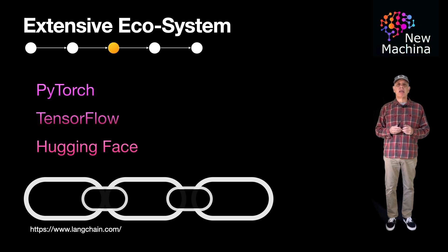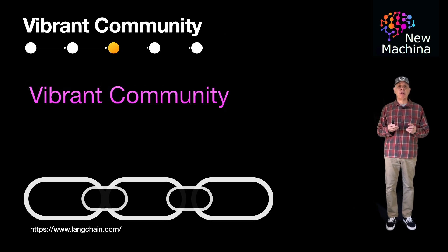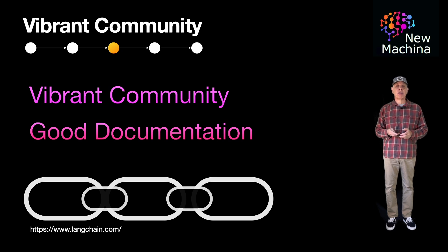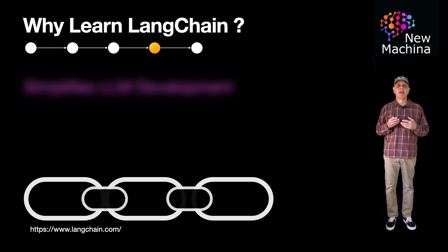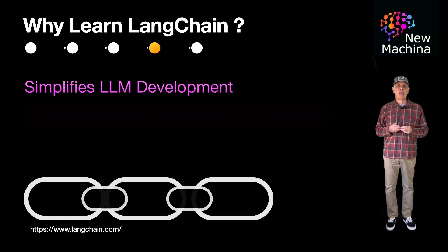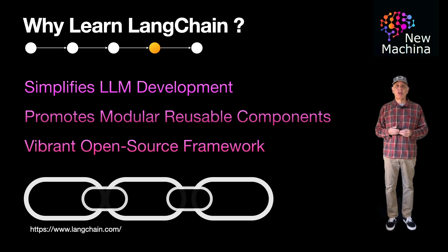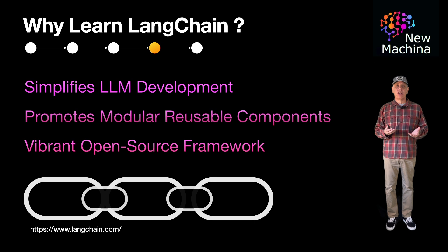As an open source project, LangChain benefits from a vibrant community of contributors and comprehensive documentation, which helps developers quickly get up to speed and contribute to the project. Why should builders invest in learning LangChain? The simple answer is because it simplifies the integration of large language models into applications, allowing for the creation of complex AI-driven workflows with modular and reusable components. Additionally, its support for popular machine learning frameworks and active community ensures robust development resources and ongoing improvements.